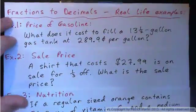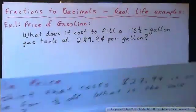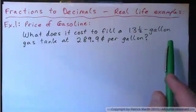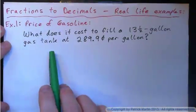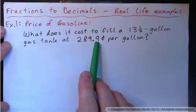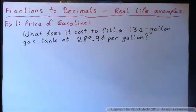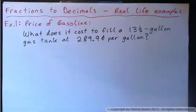We'll start with example 1. It says what does it cost to fill a 13.5 gallon gas tank at 289.9 cents per liter? So it's basically $2.89, basically $2.90, but we'll just get the exact cent amount this way.